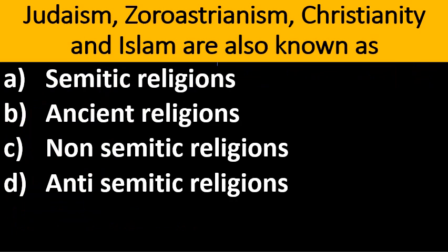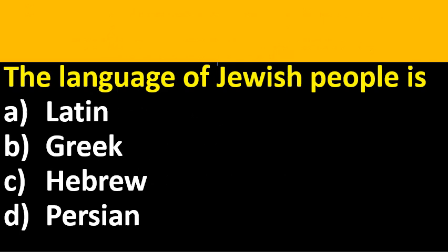Next question: Judaism, Zoroastrianism, Christianity and Islam are also known as — options are Semitic religions, ancient religions, non-Semitic religions, or anti-Semitic. The answer is Semitic religions. Judaism, Zoroastrianism, Christianity and even Islam belong to Semitic religions.